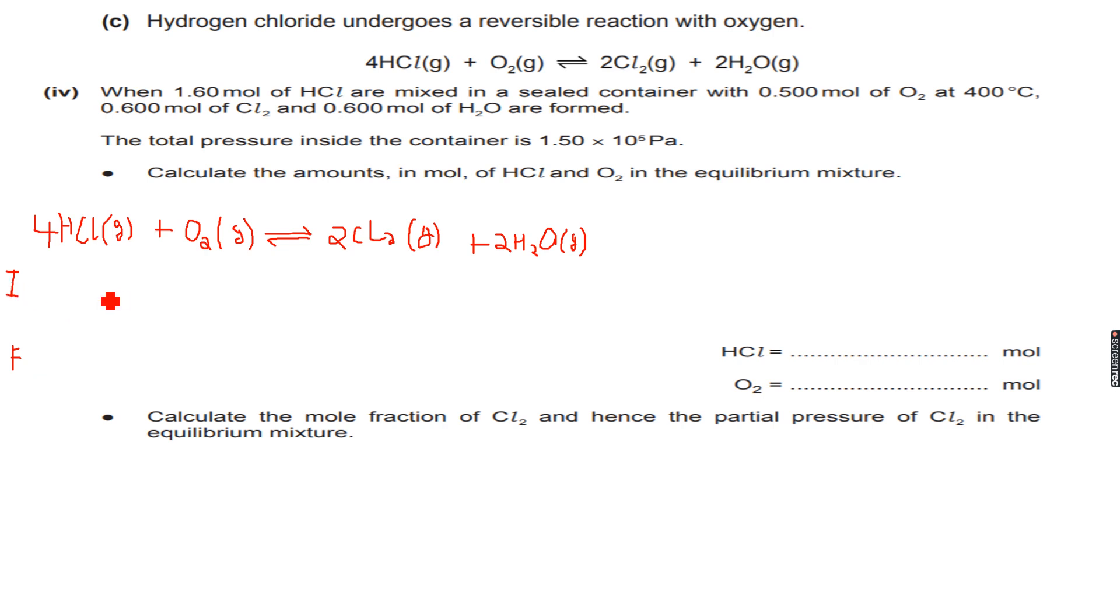I write I for initial and F for final. So now I have initially 1.6 mol of HCl, 1.60, and I have 0.5 mol of O2. And because I have not reacted it yet, because this is the initial amount, I have 0 mol of this initially. So I have 0 of these 2, and I have 1.6 of HCl and 0.5 of O2. And finally I have 0.6 mol of Cl2 and I have 0.6 mol of H2O.